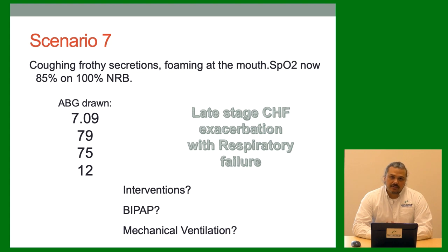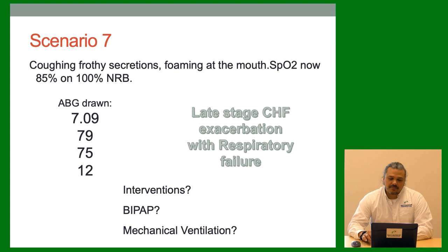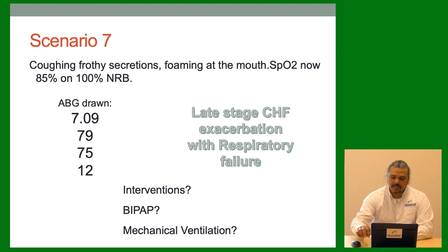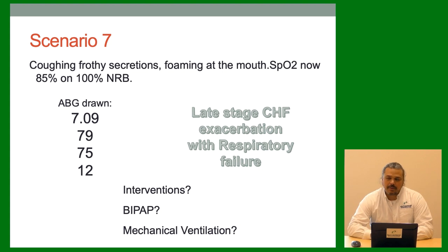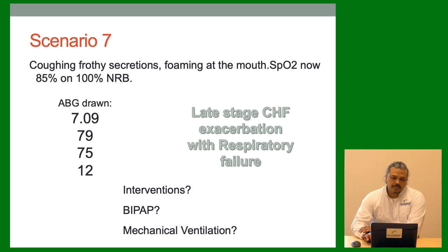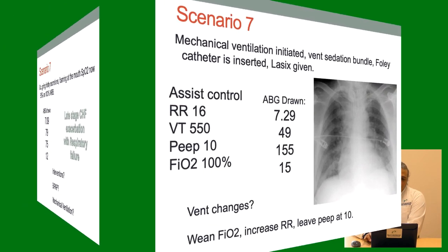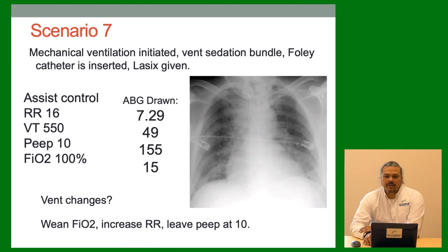Let's look at his gas: 7.09 / 79 / 75 / 12. He's failing respiratory-wise and has a metabolic issue. This is late-stage CHF — patient is already coughing up pulmonary edema. His lungs are so fluid overloaded he's not actually ventilating. So we're not hearing the rales and fine crackles — we're hearing nothing. This patient is too far gone for BiPAP; we might have to go to mechanical ventilation because he's already coughing up secretions. We intubate this patient. A Foley catheter is inserted and Lasix is given.